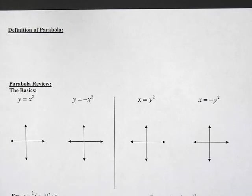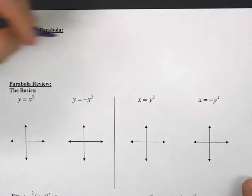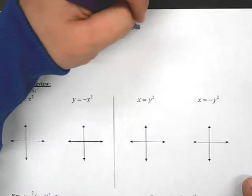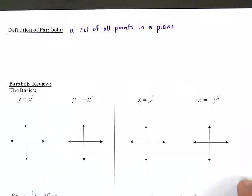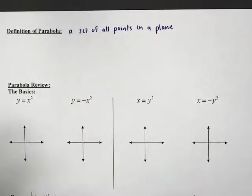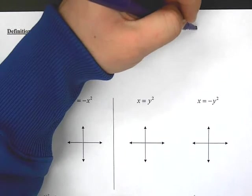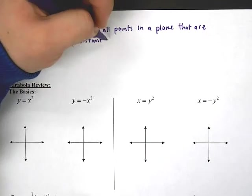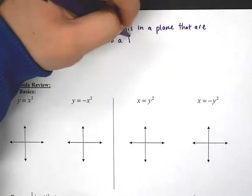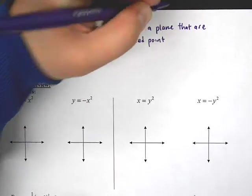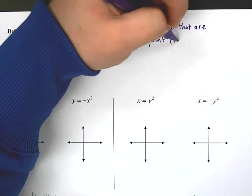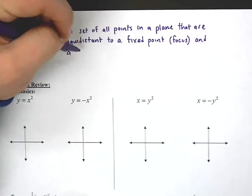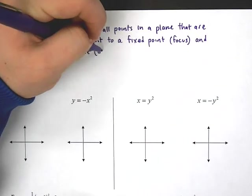In this idea of conic sections, we've always been talking about these objects that are a set of all points in a plane that are equidistant to a fixed point. It's just one fixed point, so hopefully you're okay with me calling this a focus — to a fixed point and a line. And this is new. This is called the directrix.